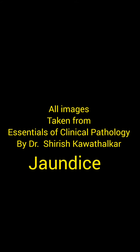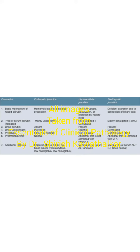Let's revise jaundice very quickly. Jaundice can be classified into pre-hepatic, hepatocellular, and post-hepatic. Pre-hepatic is due to hemolysis, hepatocellular is due to deficient uptake, conjugation or excretion, and post-hepatic is due to obstruction.